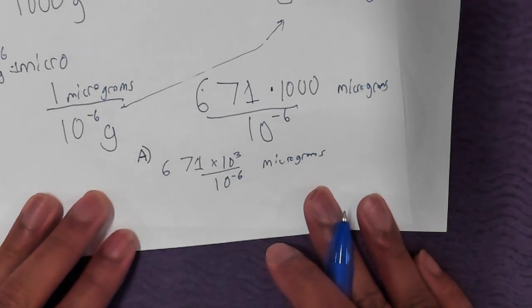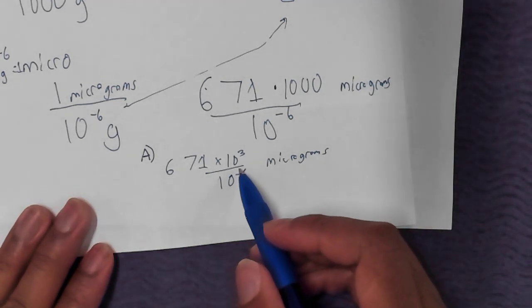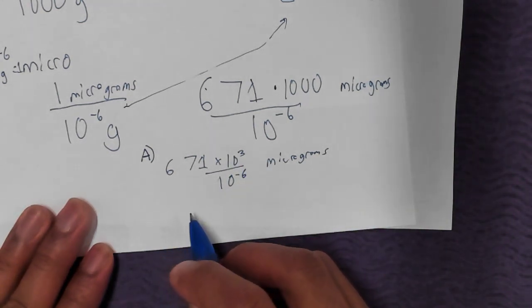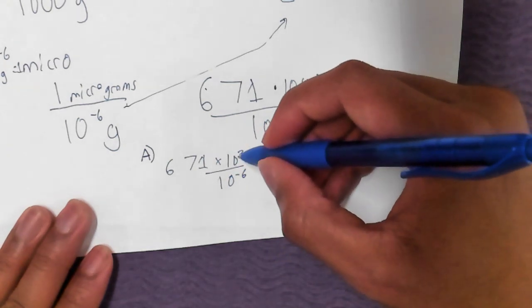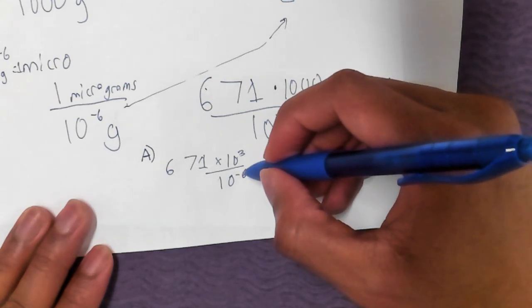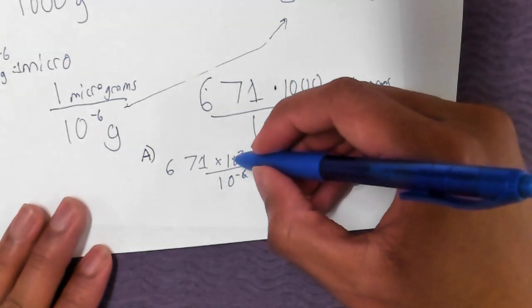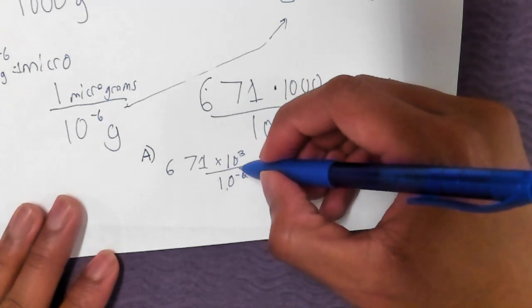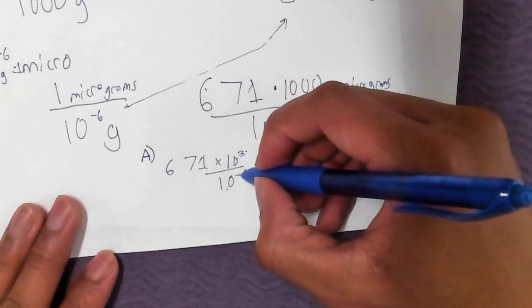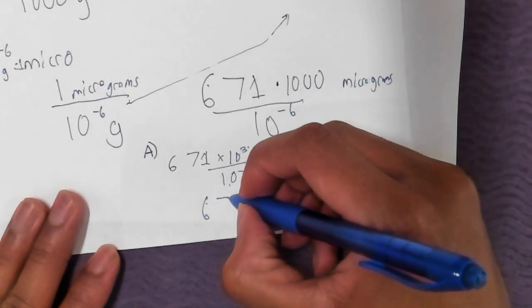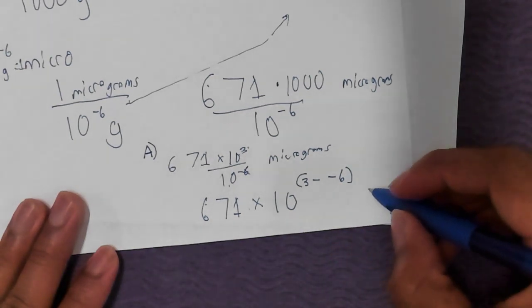I'm going to show two different ways that we can now handle this 10 to the negative 6. Part A: one way you could handle this exponent, I'm going to turn this into a comparable expression. 1,000 is the same as 10 to the third power. So we'll have 671 times 10 to the third power divided by 10 to the negative 6 micrograms.